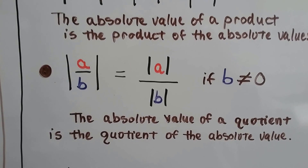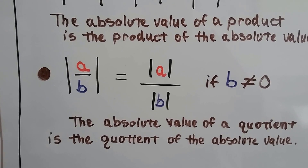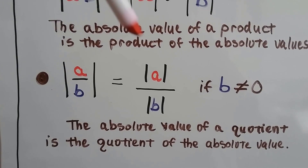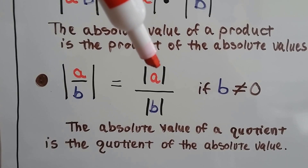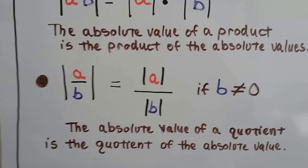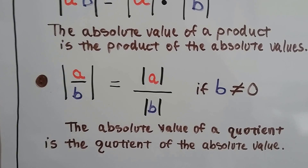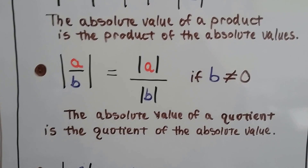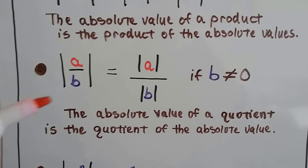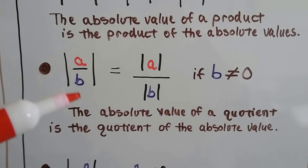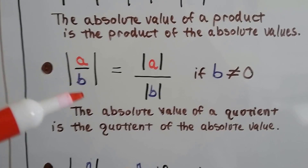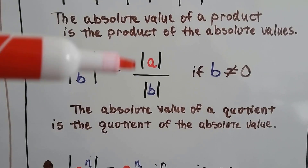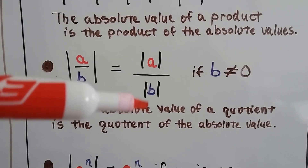And if we've got the absolute value of a divided by b, then it's going to equal the absolute value of a divided by the absolute value of b, as long as b is not 0. So it's just saying that the absolute value of a quotient is the quotient of the two absolute values.